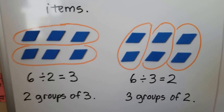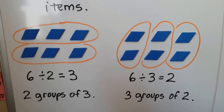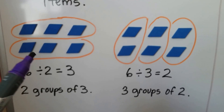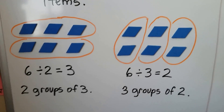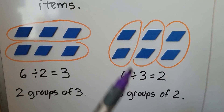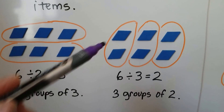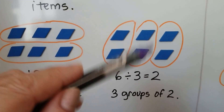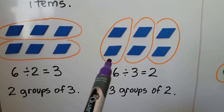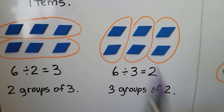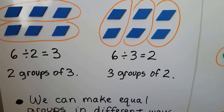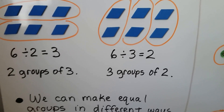Here we have six rhombuses, and we split them into two groups — one, two — and they both have three in each group. Two groups of three. Now here's six rhombuses again, but I made the circles going this way. So out of the six, I've got three groups with two in each group. We can make equal groups in different ways.